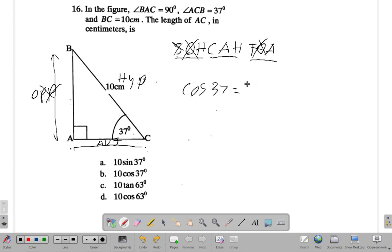So cos 37 is the adjacent side AC divided by the hypotenuse. The hypotenuse is the side that doesn't come anywhere near the right angle, it is opposite to the right angle. This one kind of rubs the side of the right angle, AB also does that, but BC is far from it, so that is the hypotenuse, 10.